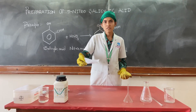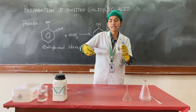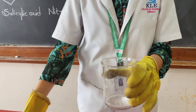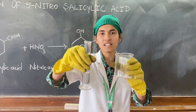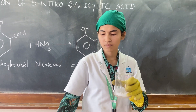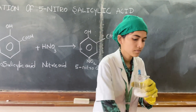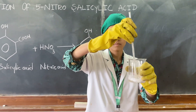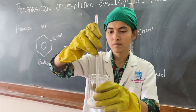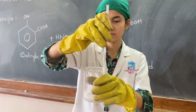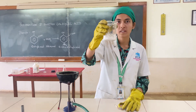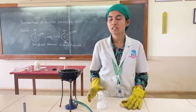We need to take 1 gram of salicylic acid in a 250 ml beaker, add 20 ml of nitric acid into the beaker, and mix it with the help of a glass rod. After mixing it properly, we need to heat it for nearly five to six minutes in the water bath.